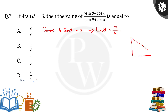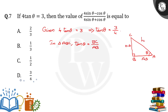Let's take a right angle triangle. Suppose ABC is the right angle triangle, right-angled at B, with angle θ at A. In triangle ABC, tan θ is equal to the opposite side BC divided by the adjacent side AB, and AC is the hypotenuse.